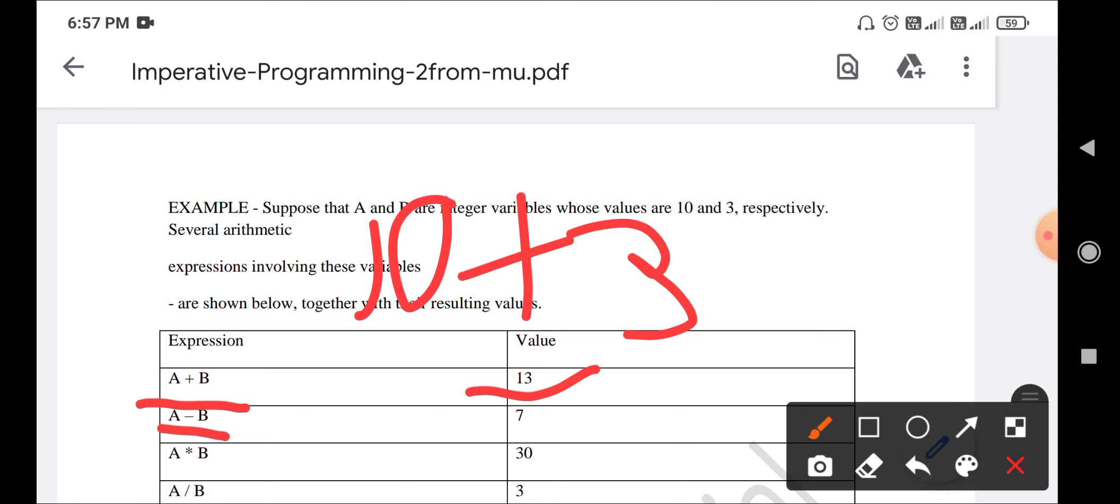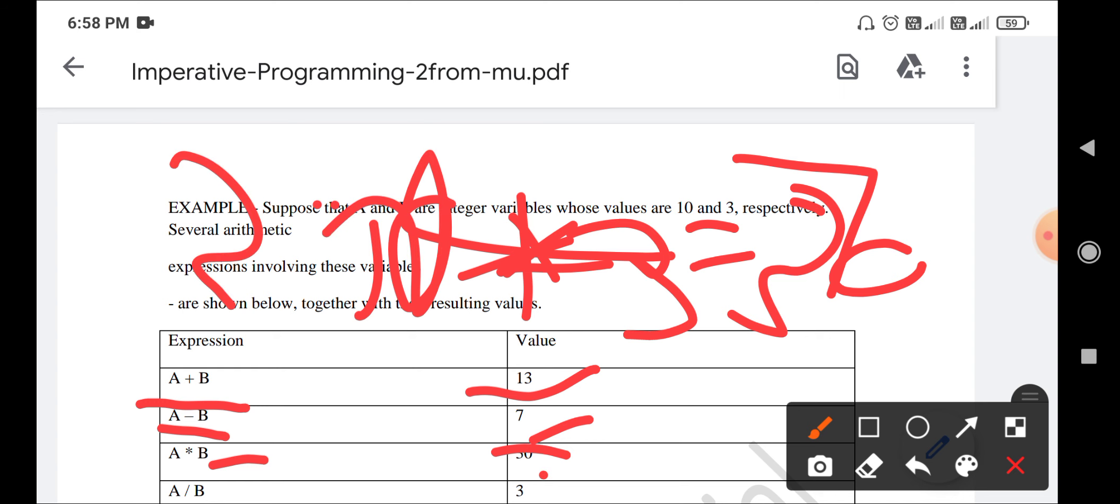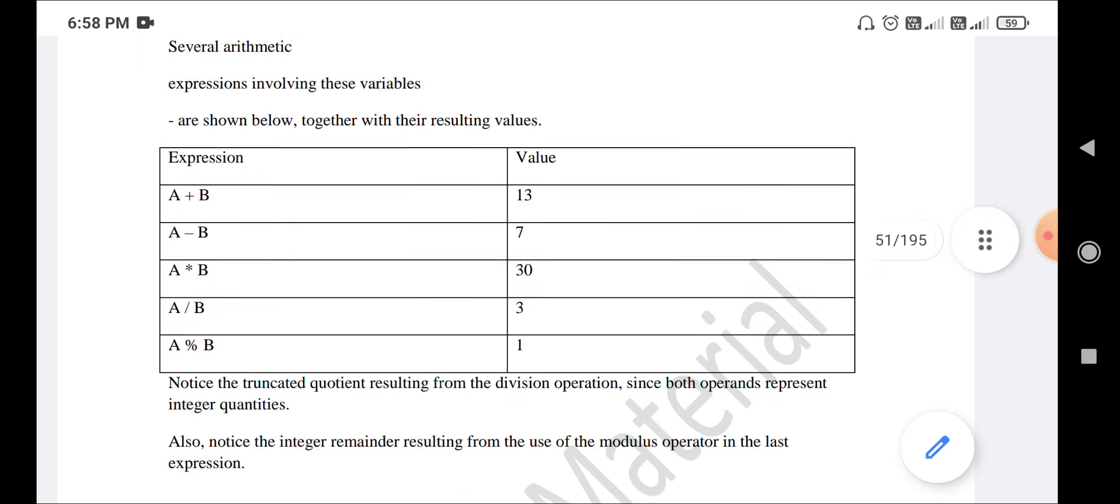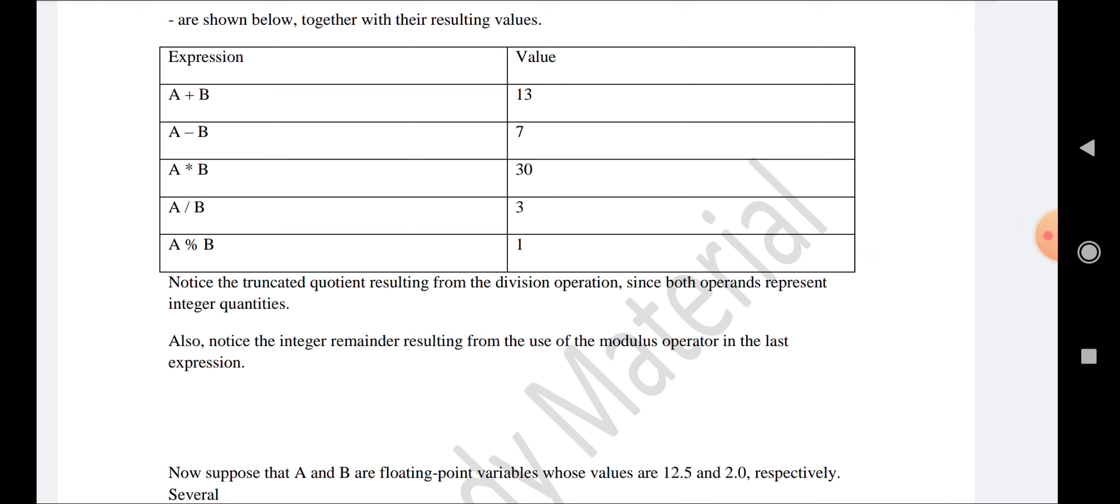a times b, 10 times 3 equals 30. a divided by b, 10 divided by 3 equals 3 point something, but here 3 is given. Then if we come to modulus,